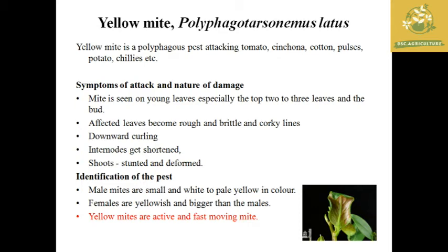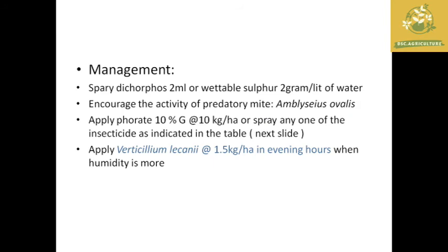The yellow mite is a polyphagous pest, found not only on tea but also on tomato, cotton, pulses, and most other plants. Symptom: the mite is seen on the top two to three young leaves and bud, causing downward curling; internodes get shortened and shoots become stunted and deformed in severe infestation. Yellow mites are active and fast-moving compared to other mites; males are small and white in color, and females are yellowish and larger than males.